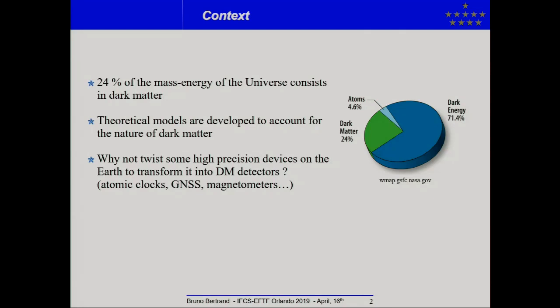There is a very large panoply of theoretical models which have been developed to account for the nature of dark matter. There was a very interesting opportunity which has taken recently in the literature, is why not twist some high-precision devices on the Earth to transform it into dark matter detectors. And it is an always-winning strategy, just because if a signature is detected, it's very nice, it's a great discovery, but if there is no signature, it's nice too, because some families of models are ruled out.